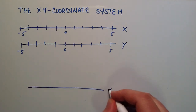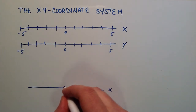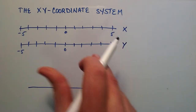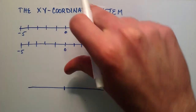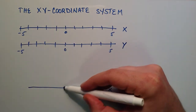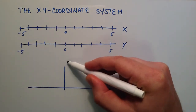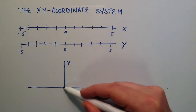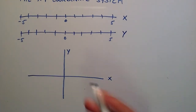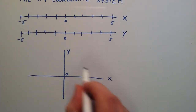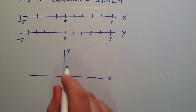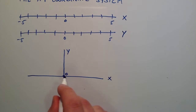So this is just the x number line once again, and right here is the 0 position on the x number line. We flip the y number line 90 degrees and place it over top of the x number line. Now the y number line is vertical, so the 0 element on both the x and the y number line is right here. Where both x and y equal 0, we call that the origin.